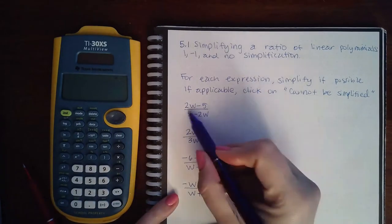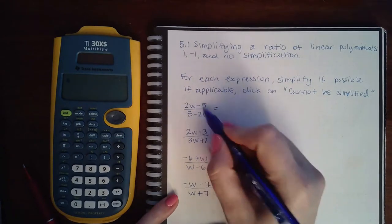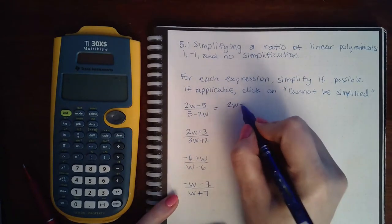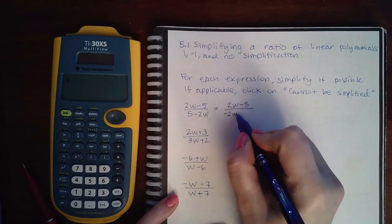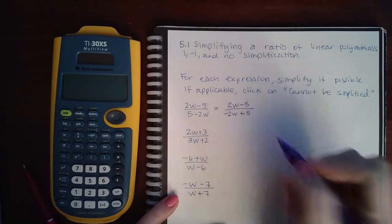The first thing we need to do before we can decide is have our terms in order. For the numerator, the terms are in order. For the denominator, the negative 2w goes in front and the positive 5w should go in the back.